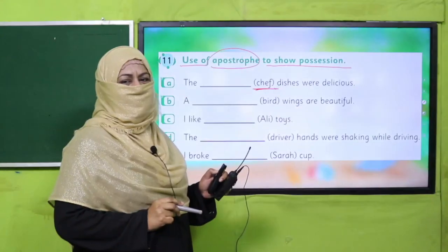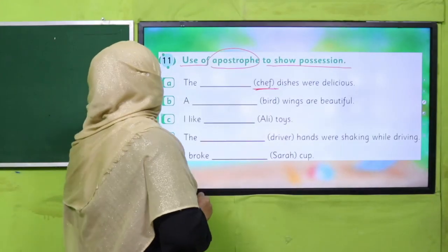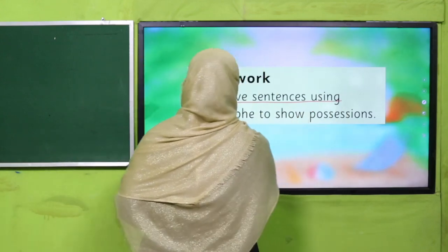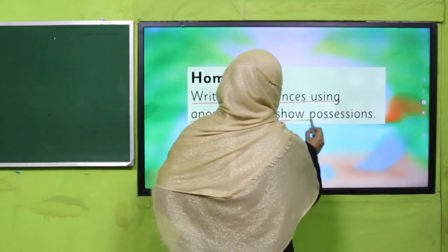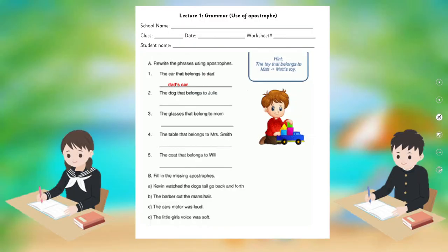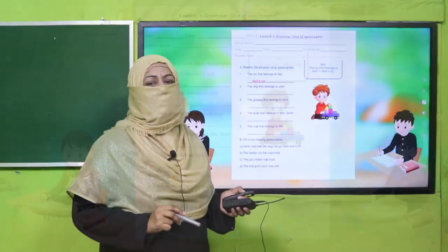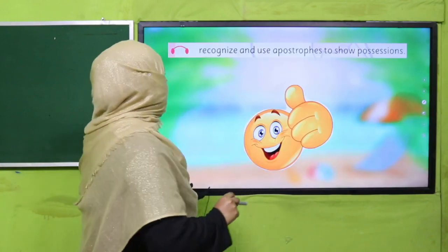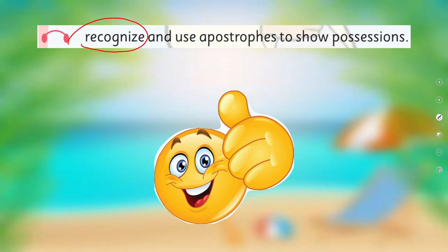Are you done? Good job! It's time for your homework: write five sentences using an apostrophe to show possession. Here is a worksheet. My dear fellow teachers, the worksheet, lesson plan, and PowerPoint presentation links are given — you may click, download, and provide a printed worksheet to students for practice. What we have learned today: we learned to recognize and use apostrophe to show possession.